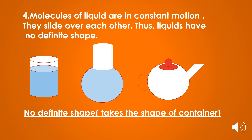Fourth postulate: no definite shape. Molecules of liquid are in constant motion and slide over each other, so liquid has no definite shape. To demonstrate: pour water in a glass — it takes the shape of the glass. Transfer it to a round bottom flask — it takes the shape of the flask. Transfer it to a kettle — it takes the shape of the kettle. This means liquids have no definite shape; they take the shape of their container.